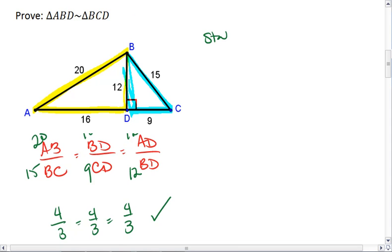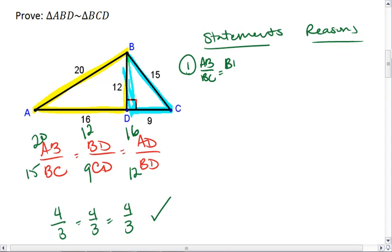We have our statements and we have our reasons. For the first step, we have AB over BC equals BD over CD equals AD over BD equals 4 thirds.